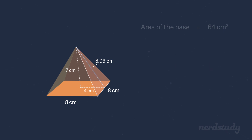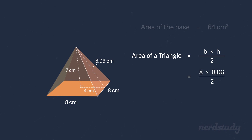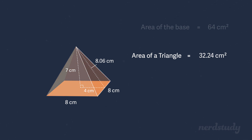Notice again how this is different from the height of the pyramid. Now that we have the approximate height, let's find the area of this triangle using the formula: base times height divided by 2. This is simply 8 times 8.06 divided by 2, which works out to be roughly 32.24 centimeters squared. Since there are 4 of these triangular faces, we multiply 32.24 by 4, which gives us 128.96 centimeters squared.